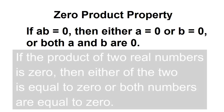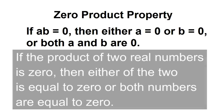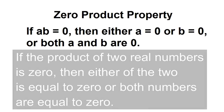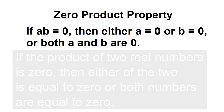Zero product property: if the product of two real numbers is 0, then either of the two is equal to 0, or both numbers are equal to 0.